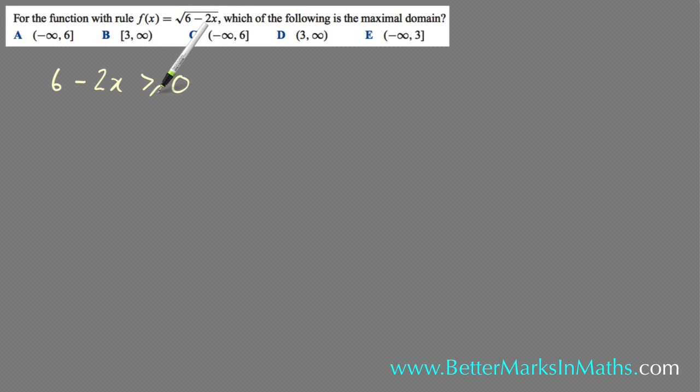Adding 2x to both sides, you end up with 6 is greater than or equal to 2x. From there, dividing both sides by 2, you end up with 3 is more than or equal to x.